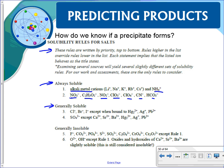Generally soluble ions: chlorides tend to be soluble unless paired with silver, lead, or mercury(I); sulfates tend to be soluble unless with certain exceptions. Generally insoluble ones will typically form a precipitate, but rule one takes precedence — any alkali metal makes it aqueous. Oxides and hydroxides are generally precipitates unless with an alkali metal or ammonium.